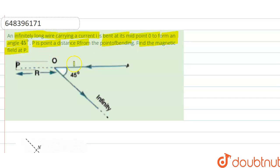So here we have given that we are having an infinitely long wire which is carrying a current i. Now this wire is bent at its midpoint at this point O, so here the angle is 45 degree made by this bent wire.